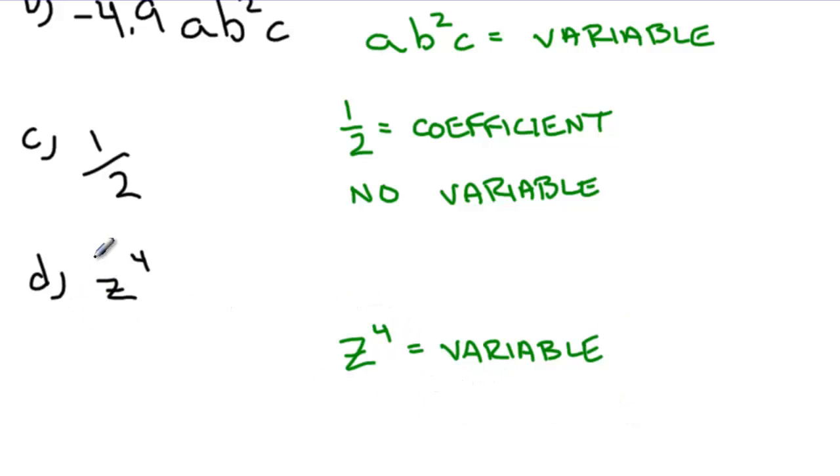And, in this case, even though we can't see it, this term has a coefficient of 1. So when there is no coefficient in front of a variable, it's understood to be 1.